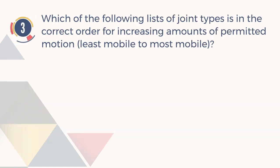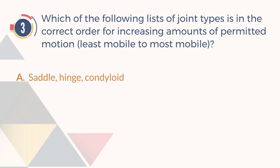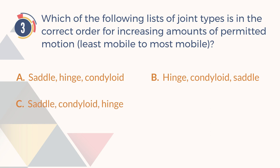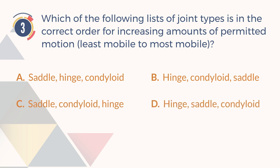Number 3. Which of the following lists of joint types is in the correct order for increasing amounts of permitted motion, least mobile to most mobile? A. Saddle, hinge, condyloid. B. Hinge, condyloid, saddle. C. Saddle, condyloid, hinge. D. Hinge, saddle, condyloid.